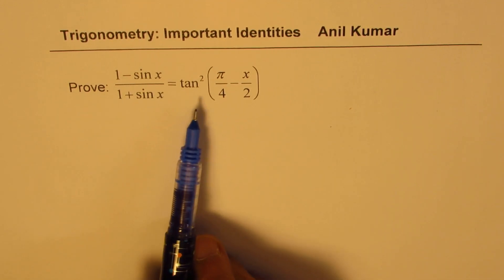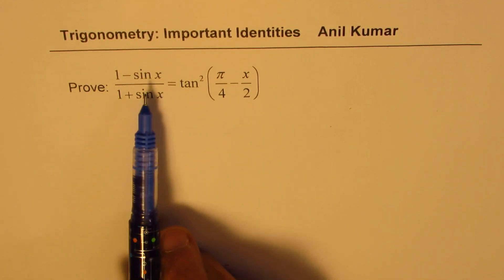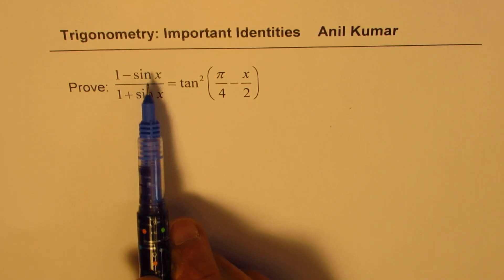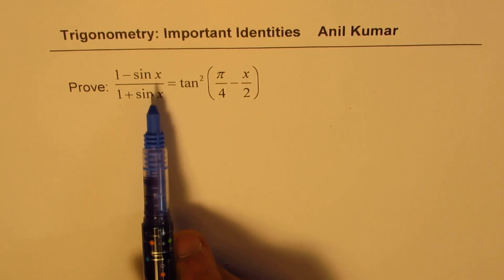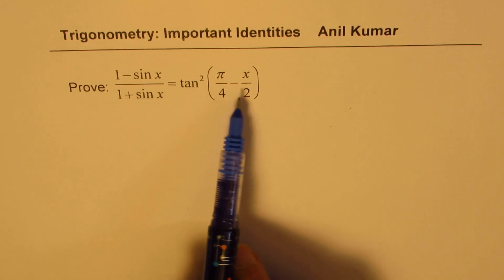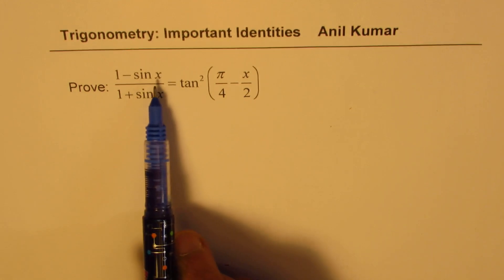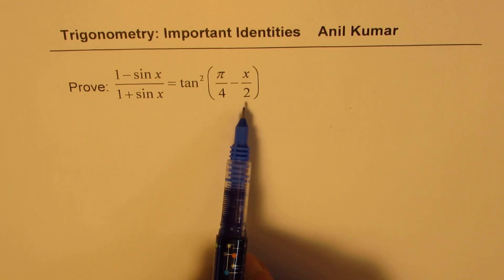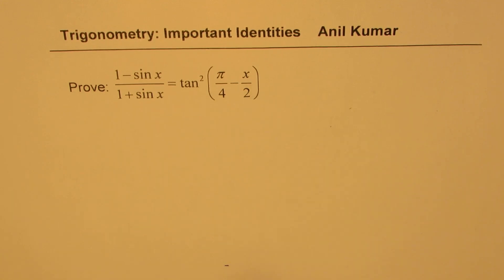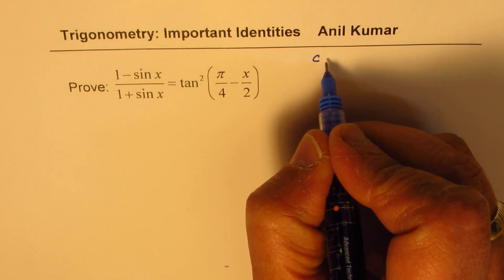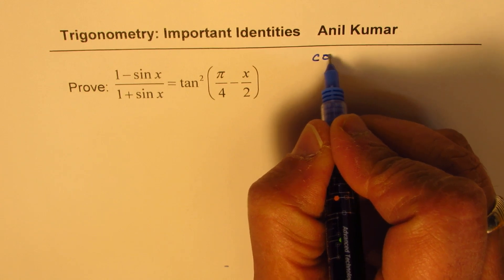When you look at it, you want to go from sin to tan. That means we are looking for sine squared over cosine squared of x. The second thing you notice is that the angle changes from x to x by 2. So we need to understand double angle formulas.